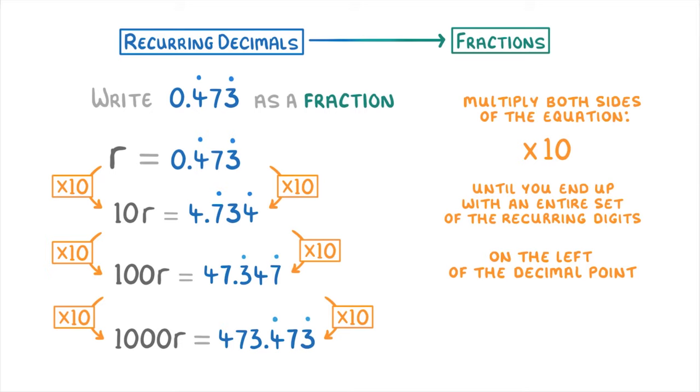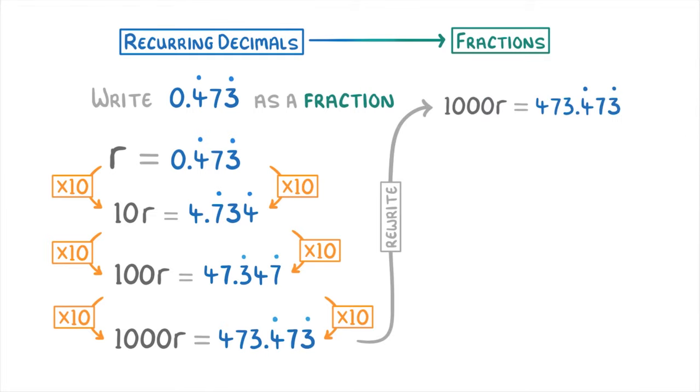So we now have a full copy of the recurring digits to the left of the decimal point and so we can stop multiplying by 10. And to give ourselves some more space, let's just rewrite this up here.